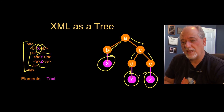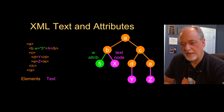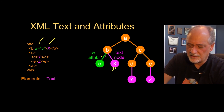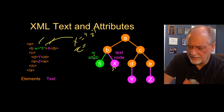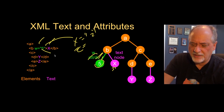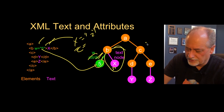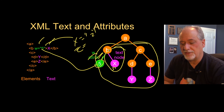When we add attributes, you can see why it's useful to treat the text area as a child node — because an attribute is different. The text is a special kind of child, and you can have more than one attribute, for example x equals two, zap equals whatever. The W attribute has a value of five. You can have multiple attributes, but within one simple node you can only have one text element.